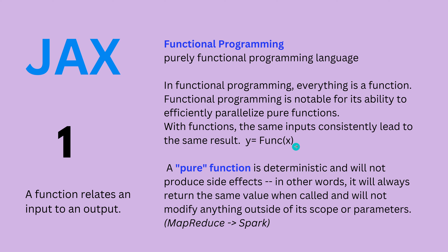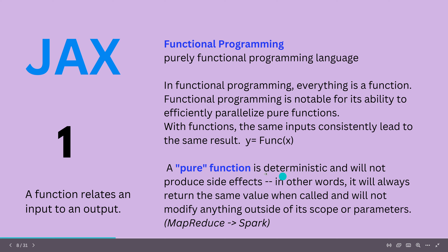A pure function — a pure functional object — is deterministic and will not produce any side effect. It will always return the same value when called and will not modify anything outside of its scope or parameters. You will always get the same answer Y if you input X. If you remember, Google had MapReduce and Spark on Databricks — MapReduce was exactly this pure functional form.